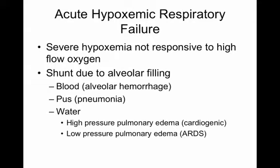Acute hypoxemic respiratory failure is, in general, shunt—severe hypoxemia not responding to high-flow oxygen. Shunt is due to alveolar filling: either blood (alveolar hemorrhage), pus (pneumonia), or water. That water can be either high-pressure pulmonary edema or low-pressure pulmonary edema. High-pressure and pneumonia are much easier to deal with than low-pressure pulmonary edema, which is ARDS.